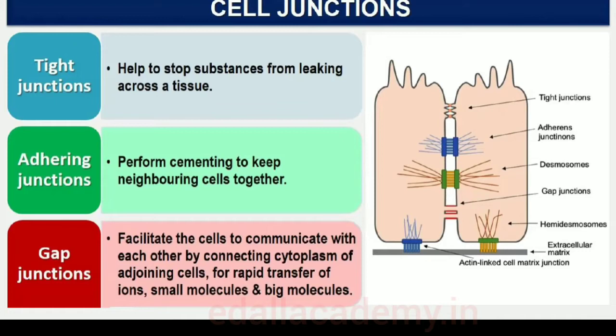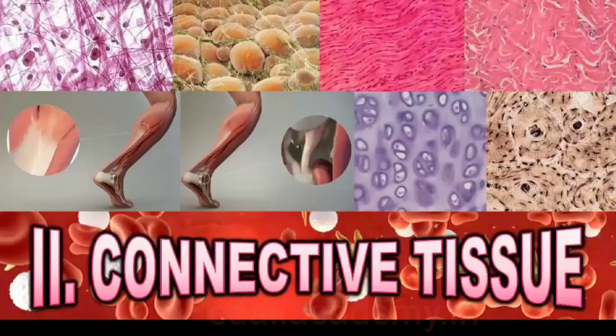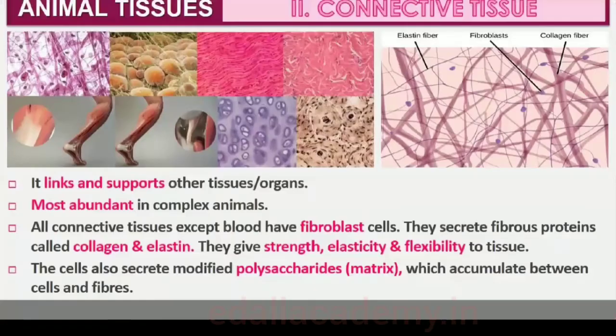7.1.2 Connective Tissue. Connective tissues are the most abundant and widely distributed in the body of complex animals. They are named connective tissues because of their special function of linking and supporting other tissues and organs of the body. They range from soft connective tissues to specialized types, which include cartilage, bone, adipose, and blood.